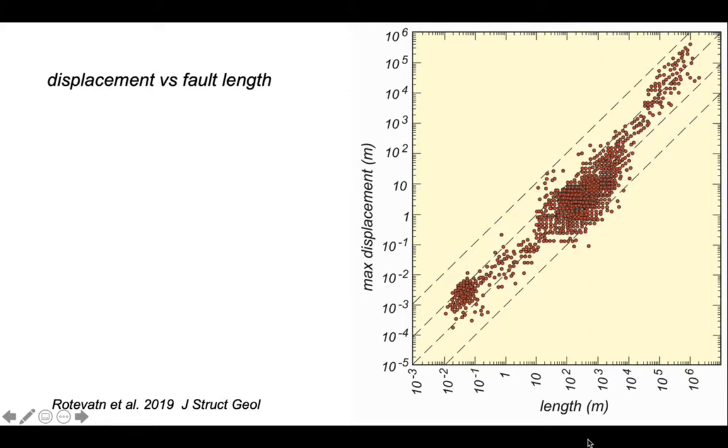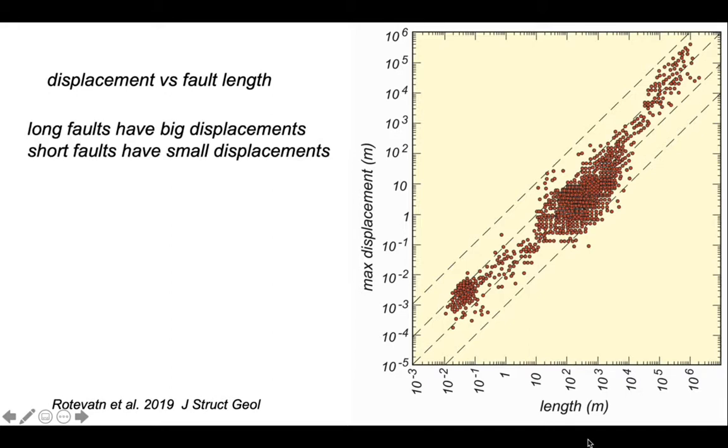And you can plot them on the log-log plot to create a quasi-linear relationship such as you see there. So there's a simple relationship here: long faults have big displacements, short faults have small displacements. Now of course that's not entirely unexpected.